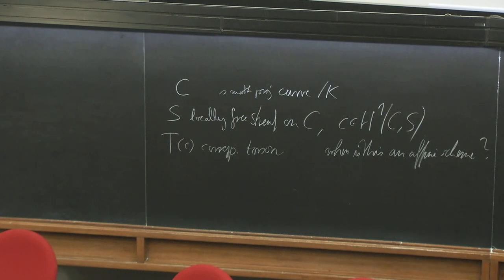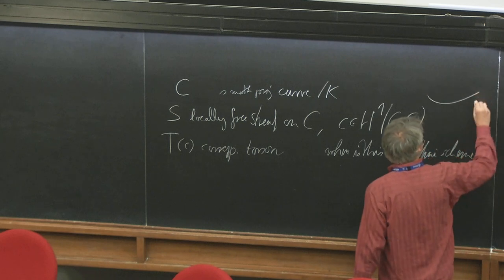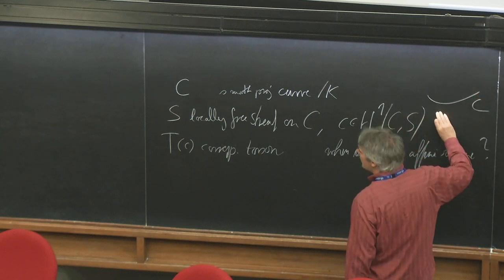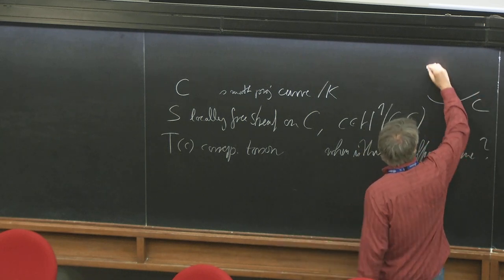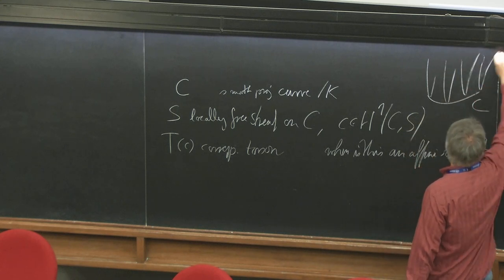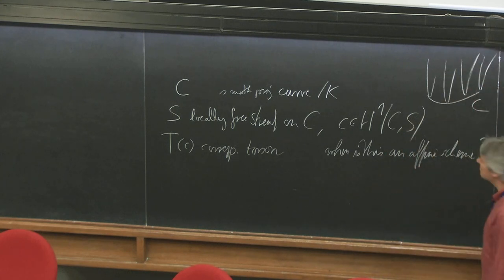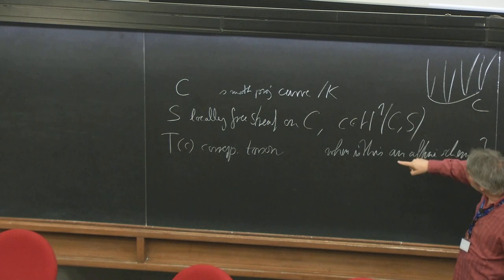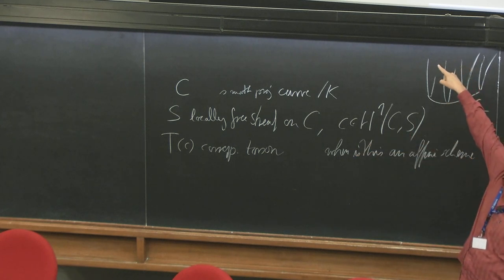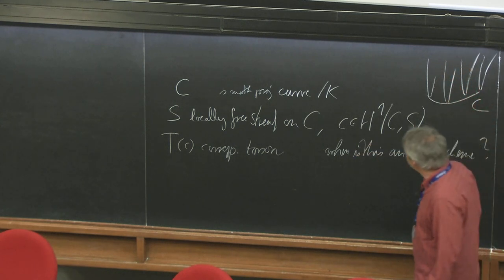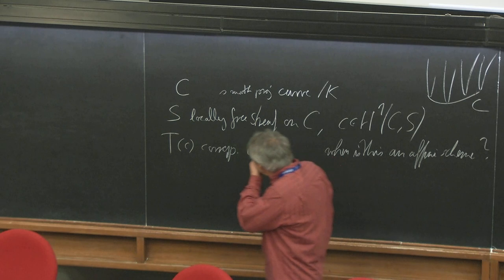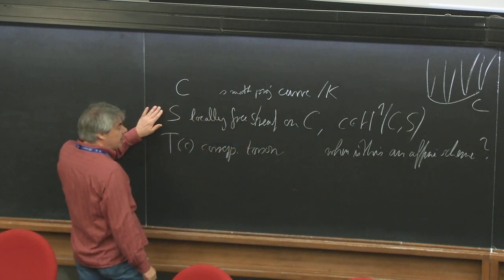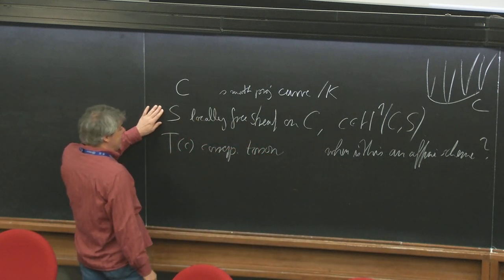The picture you should have in mind looks something like this. In general, there is no section. The cohomology class is trivial if and only if the torsor has a section, in which case it is isomorphic to the locally free sheaf itself.